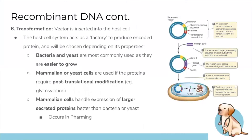This diagram shows the whole process. We take the gene we want, cut it with restriction enzymes, insert it into a vector, and then insert the vector into a host cell via transformation. Inside the host, it produces the desired protein and continues replicating. The point of recombinant DNA is to produce this protein for human use.